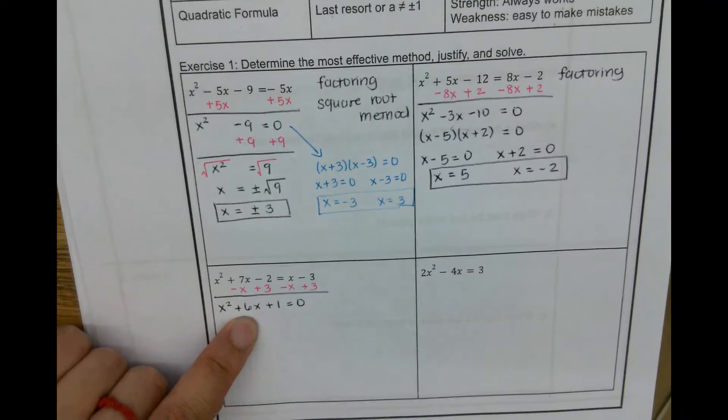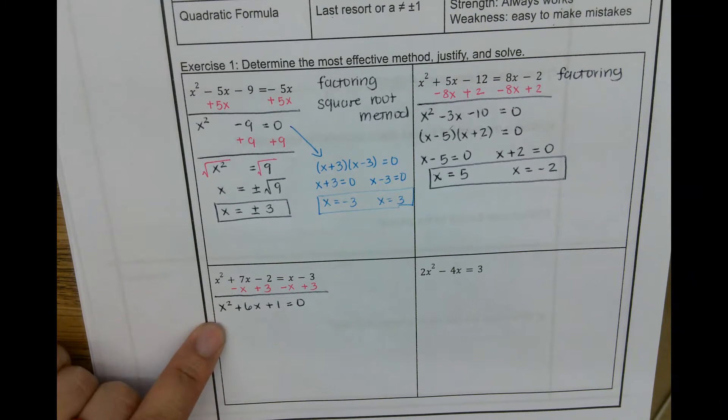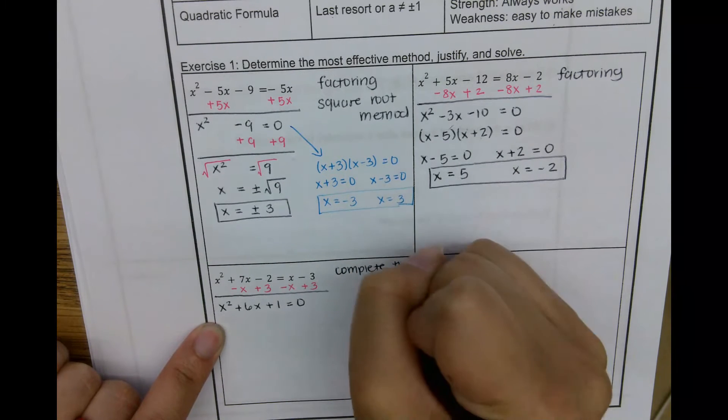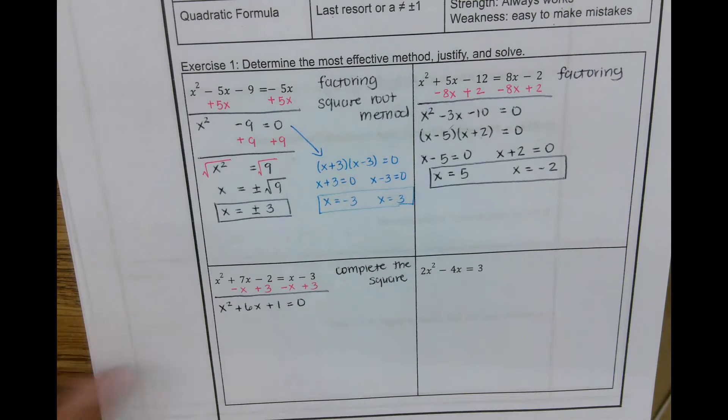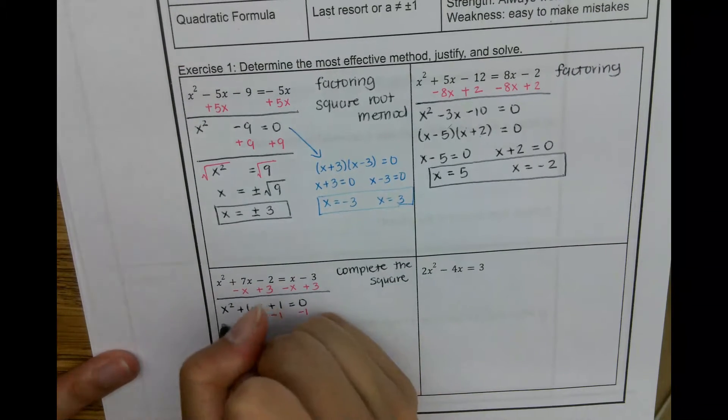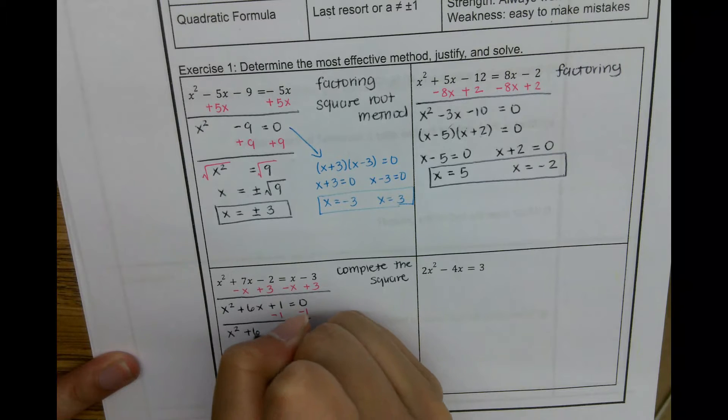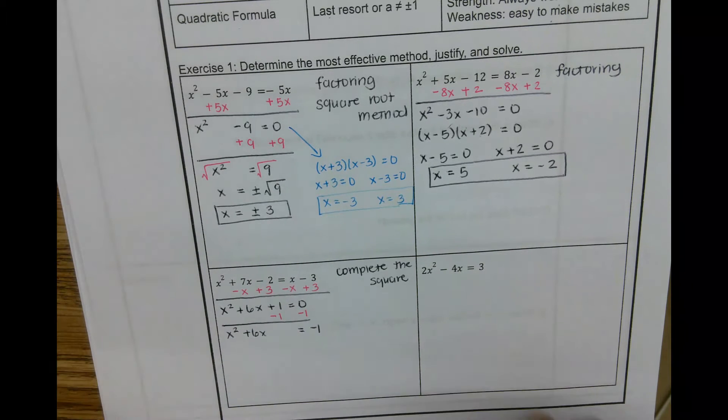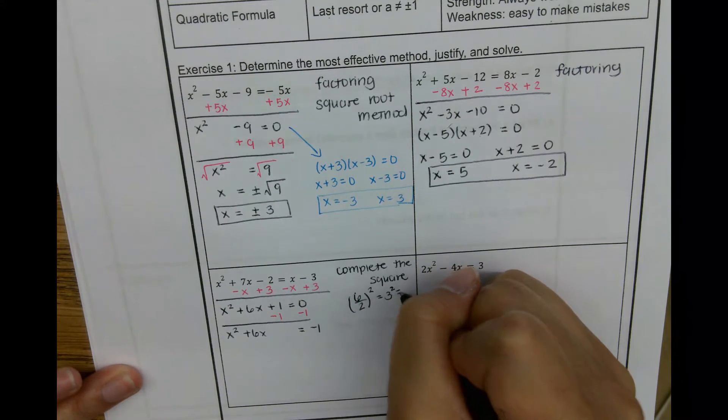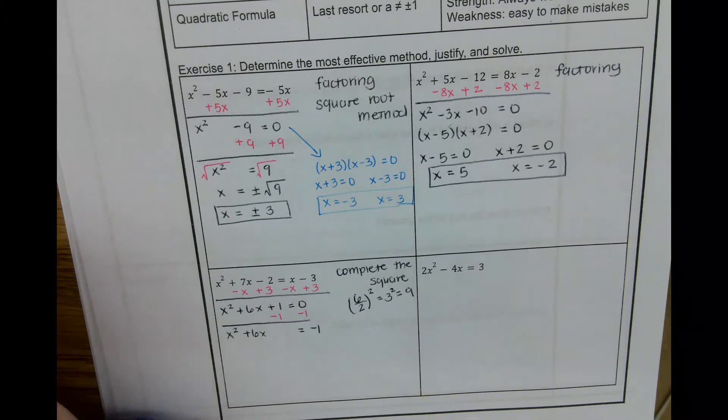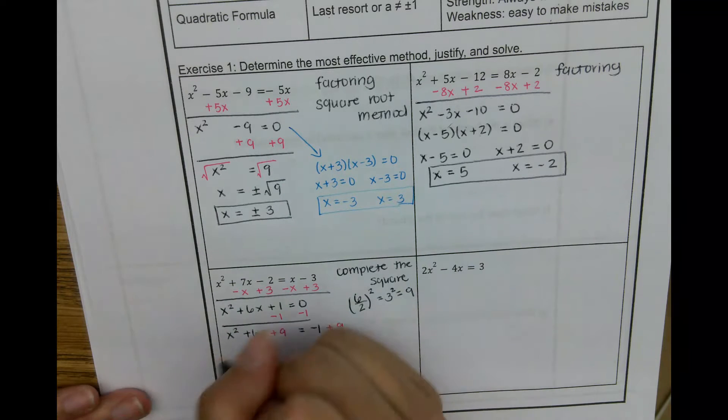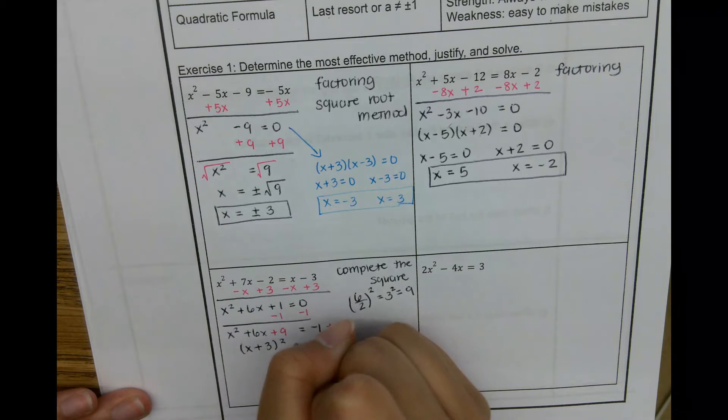So what I'm going to do, move the x terms by itself. So subtract 1. Then I'm going to take b divided by 2 and square. And some of us now can even do it in our heads. So that even saves us more time. So that's a 9 here. I'm going to add 9 here and add 9 here. Then factor. This is x plus 3 squared. This is 8.